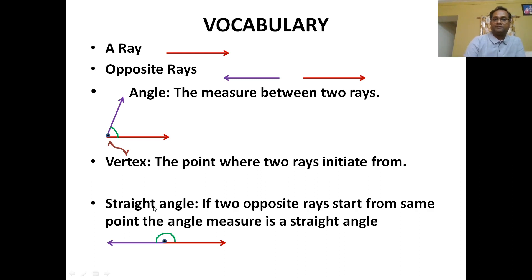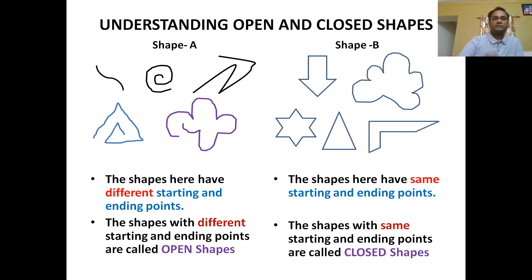Now let us know what is a straight angle. A straight angle is formed when two opposite rays are coincident — when two opposite rays start from the same point. The angle measure between these two rays, as you can see here, is called a straight angle.